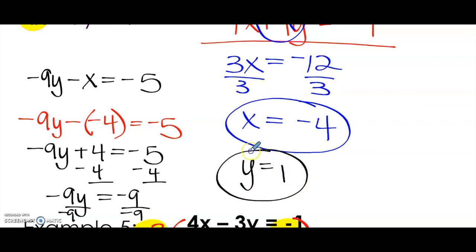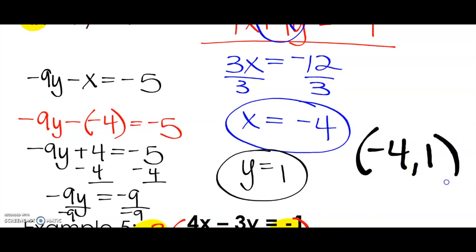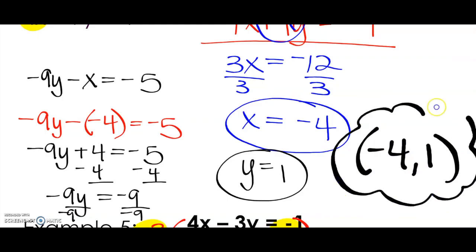So our solution for the system is going to be X equals negative 4, Y equals 1. So (-4, 1) is our solution. Good job, guys, and good luck on your quiz.